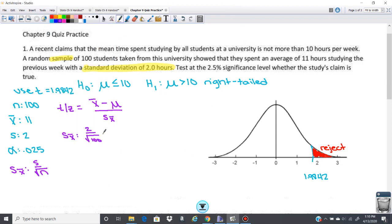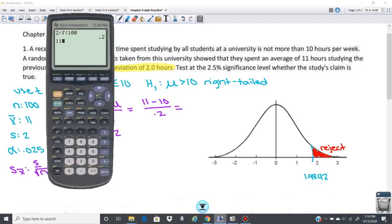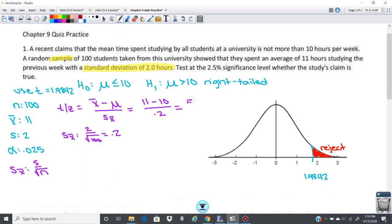So let's go ahead and plug those in. So you have x-bar is 11. Our mean is 10 given to us in the problem over 0.2. So 11 minus 10 is 1, and then we will divide that by 0.2, so we get 5. That's a really big value for z or t.